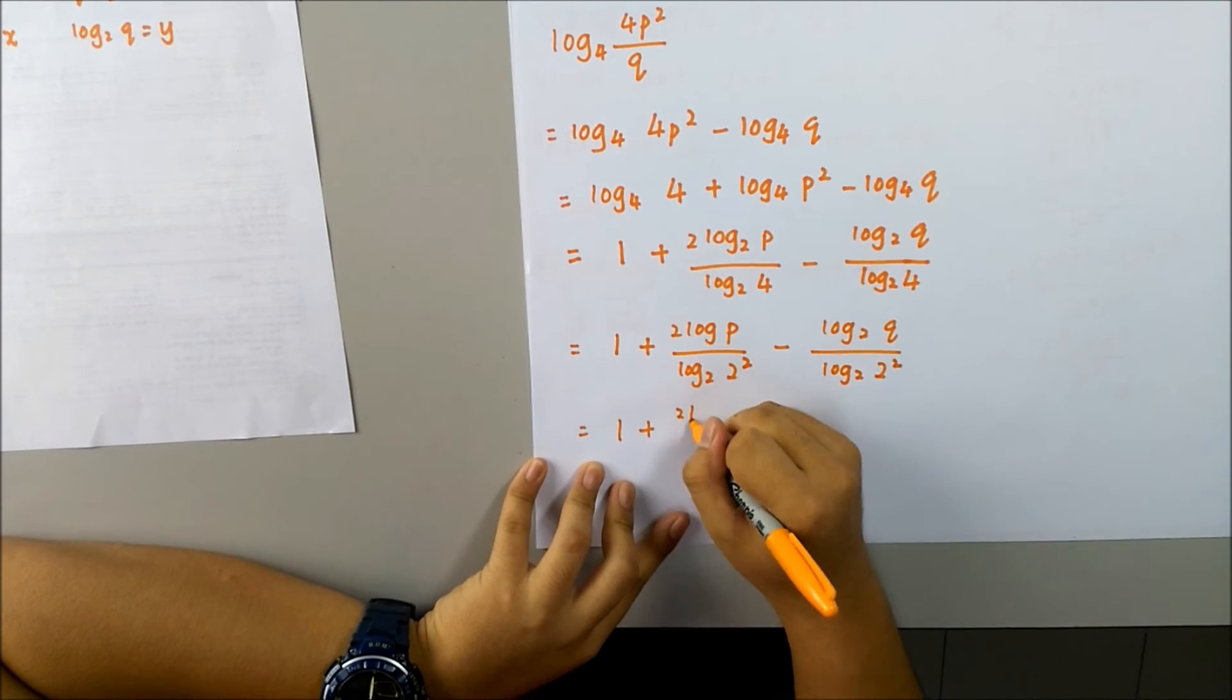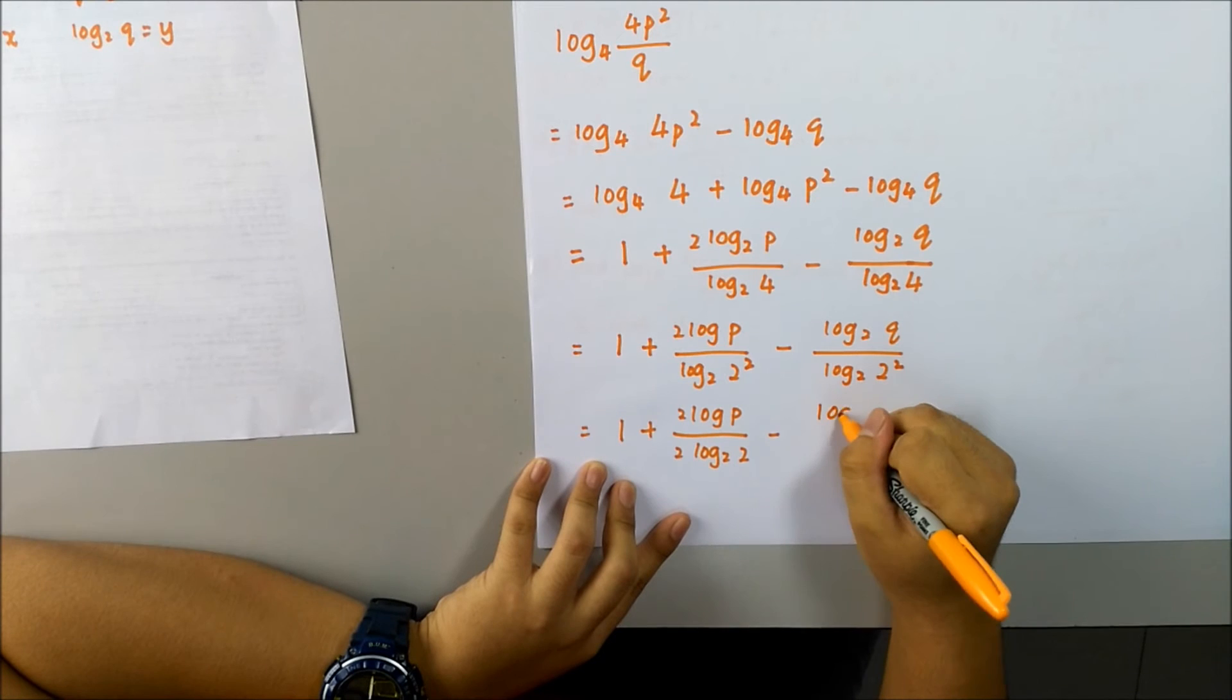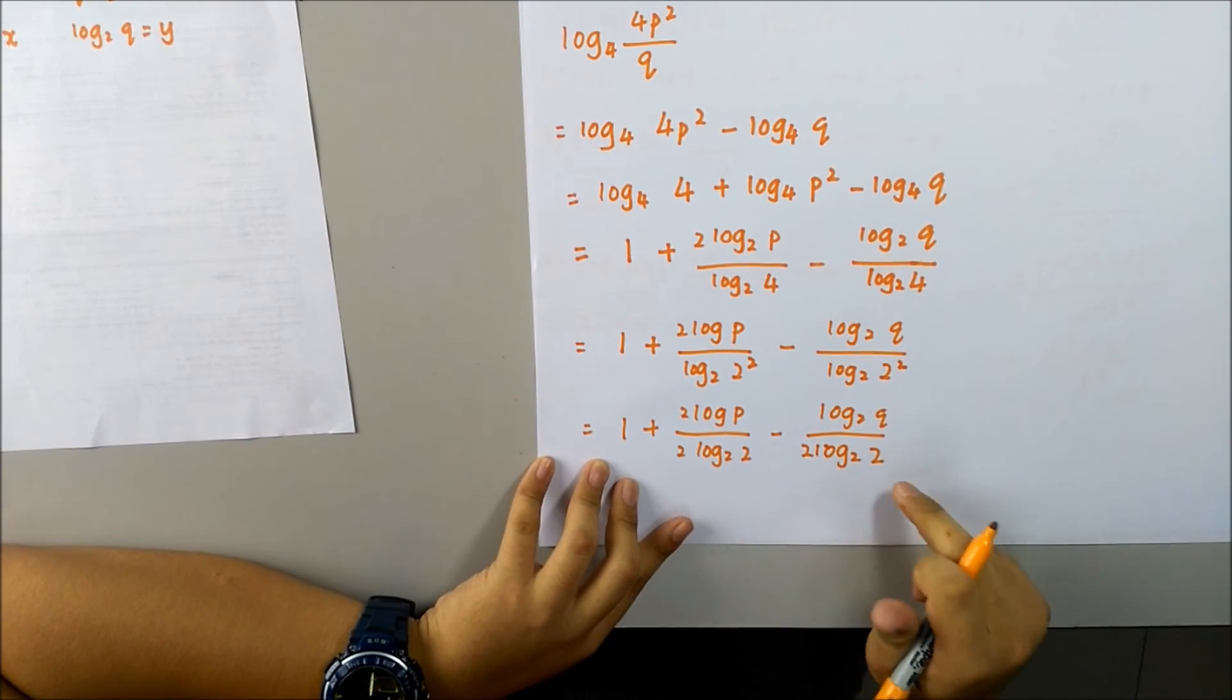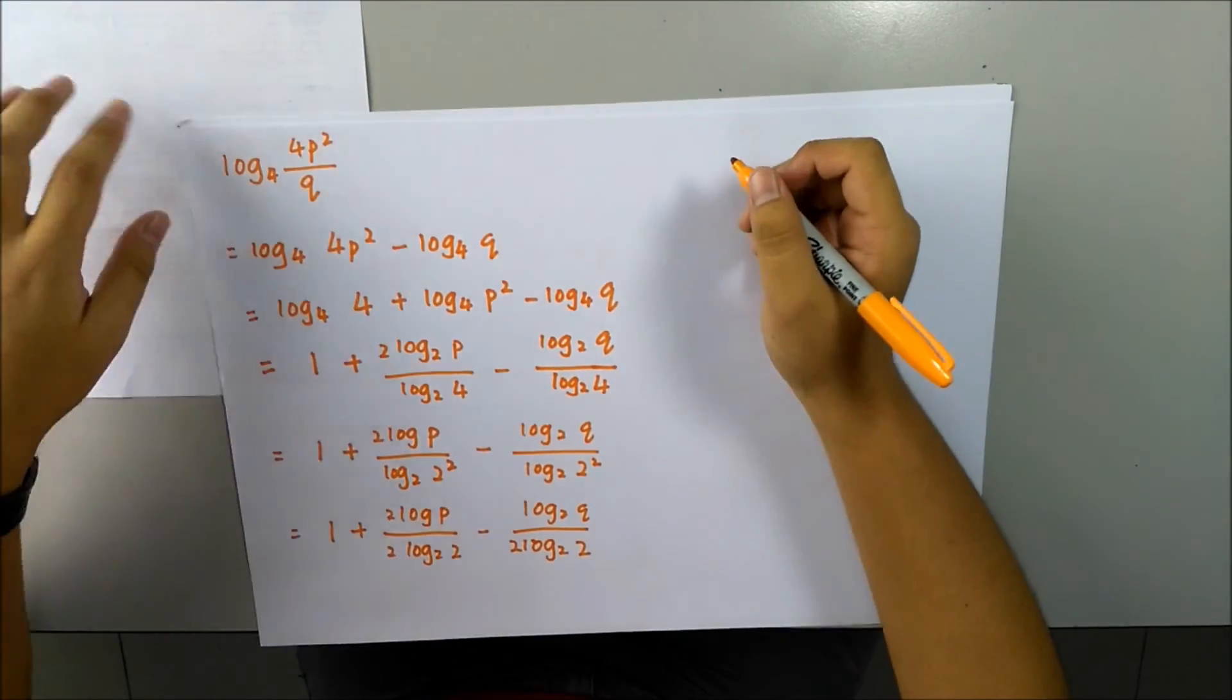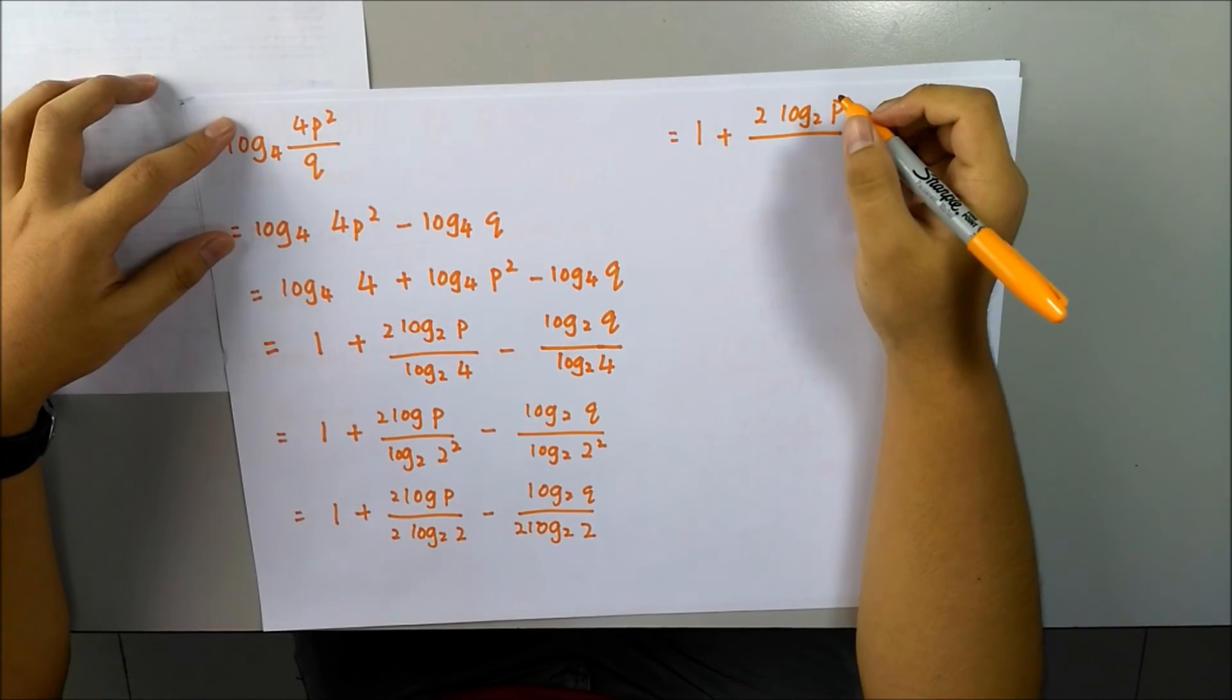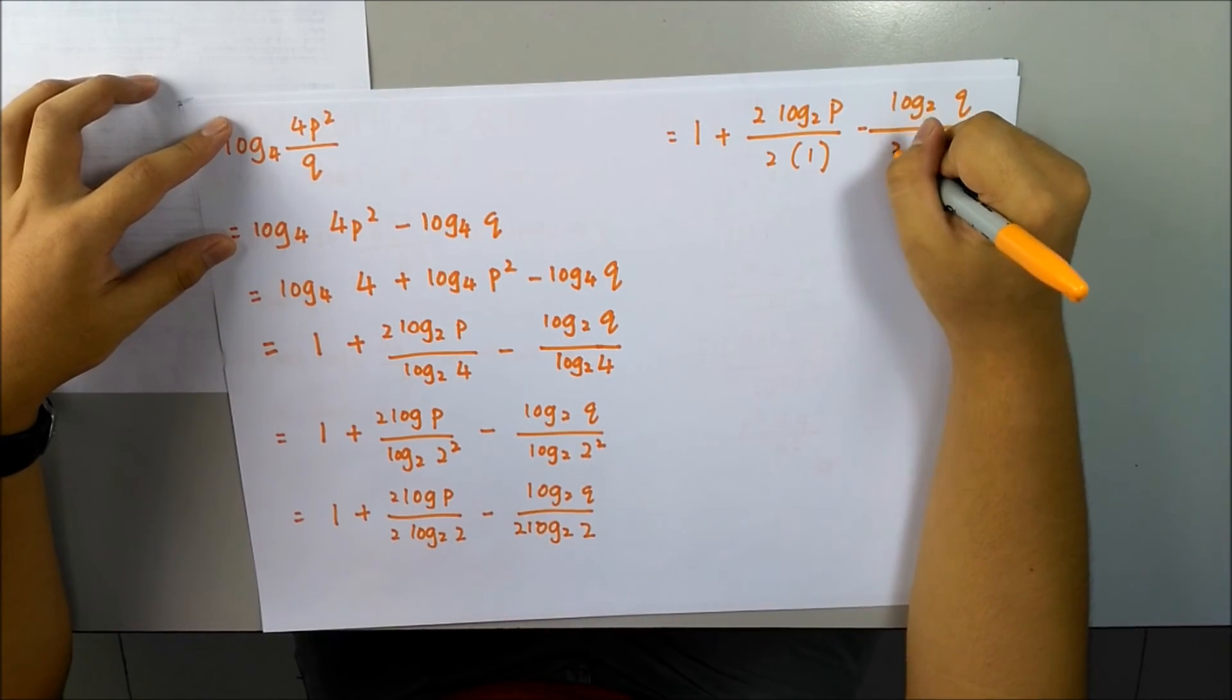So it's equal to 1 plus log 2 of p over 2 log 2 of 2 minus log 2 of q over 2 log 2 of 2. Log 2 of 2 equals 1. So 1 plus 2 log 2 of p over 2 times 1 minus log 2 of q over 2 times 1.